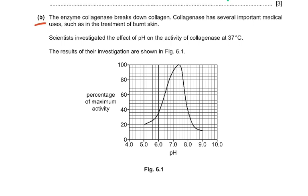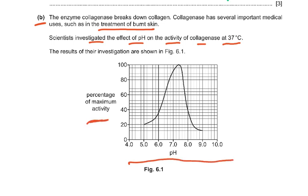Part B of question 6: the enzyme collagenase breaks down collagen and has important medical uses such as treatment of burnt skin. Scientists investigated the effect of pH on collagenase activity at 37°C. The results show percentage of maximum activity versus pH, with the peak — 100% maximum activity — occurring at approximately pH 7.4.